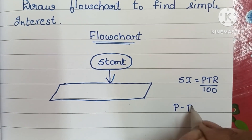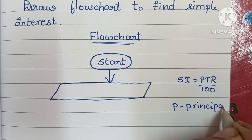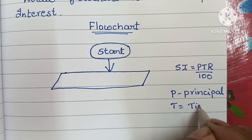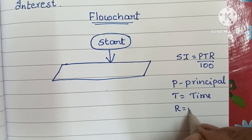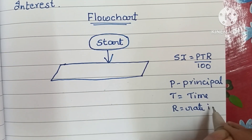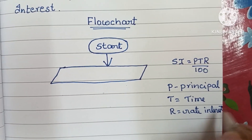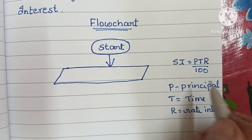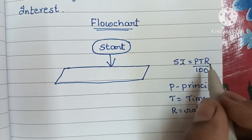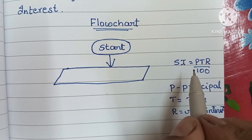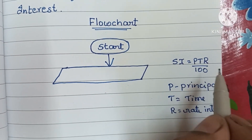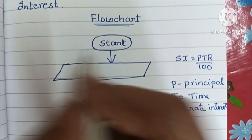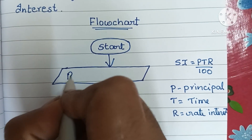Here, P is the principal, T is the time, and R is the rate of interest. So we have to read the input values P, T, and R — where P is principal, T is time, and R is rate of interest.